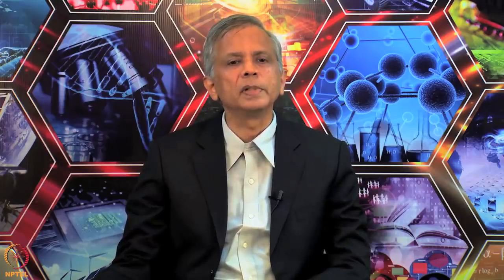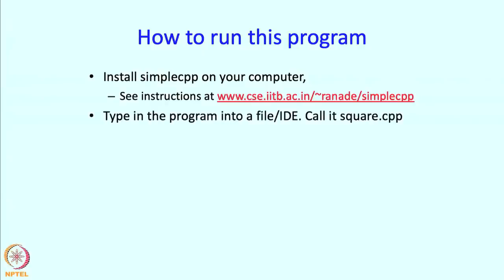Okay, so this is what the program is supposed to have done. And let us see now how do we run this program. So for that purpose we need to install SimpleCPP on your computer. How do you do this? Well, you have to see the instructions at this webpage. Then you have to type in the program into a file or the IDE, whatever you have downloaded. And let us say you call it square.cpp.